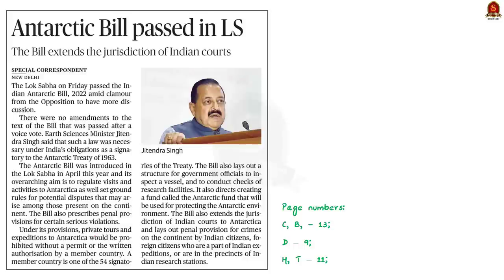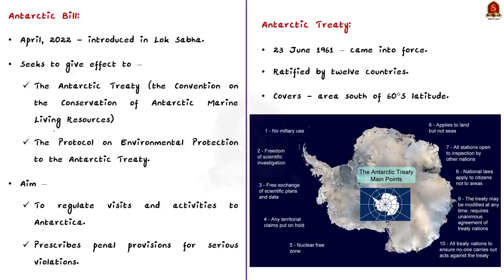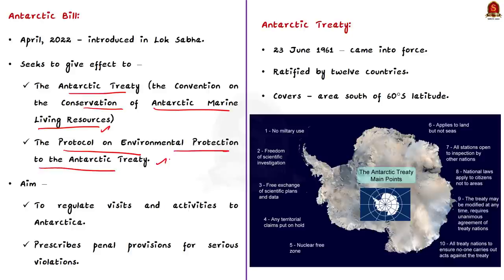This news article talks about the Antarctic Bill passed by the Lok Sabha. Surprisingly, no amendments were made to the text of the bill, which was passed after a voice vote. The Antarctic Bill was introduced in Lok Sabha in April this year. The bill seeks to give effect to the Antarctic Treaty — the Convention on the Conservation of Antarctic Marine Living Resources and the Protocol on Environmental Protection to the Antarctic Treaty. Its primary aim is to regulate visits and activities in Antarctica, set ground rules for disputes among those present, and prescribe penal provisions for serious violations.